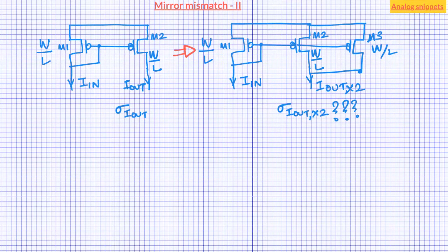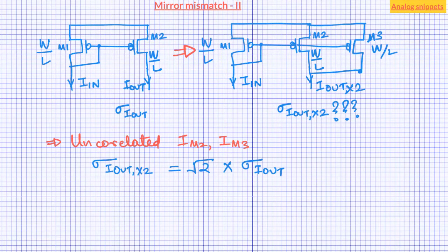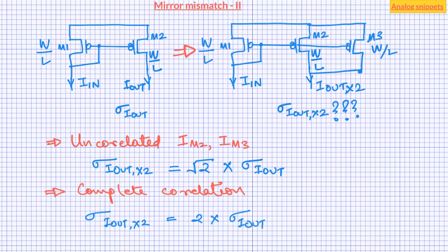Let's take a step back and try to analyze this problem intuitively. If the spread in the currents of M2 and M3 were uncorrelated, the variation in total output current would have been root 2 times sigma I_out. If they were fully correlated, then sigma I_out x2 would be simply twice sigma I_out. But in this case we are somewhere between these two limits, so we expect our answer to be between them. I will explain a method which utilizes a concept called self-mismatch.